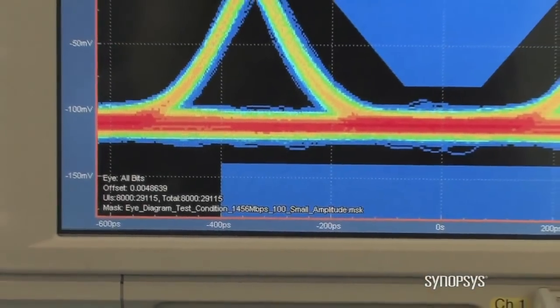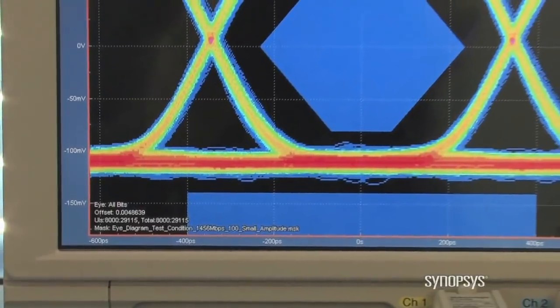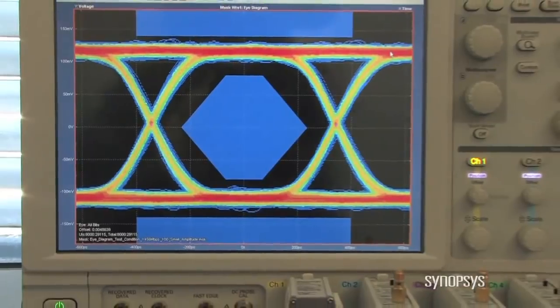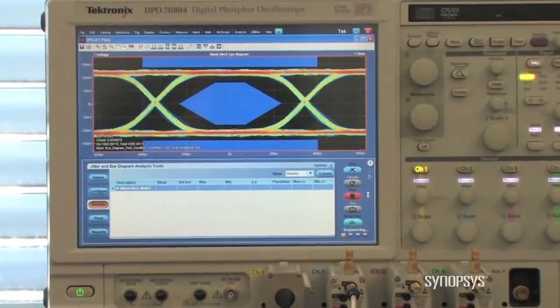First, we can see the eye diagram with a small amplitude configuration. The blue line represents the eye mask that is required to meet the specifications and cannot be touched by the measurement, which is represented by the yellow line.